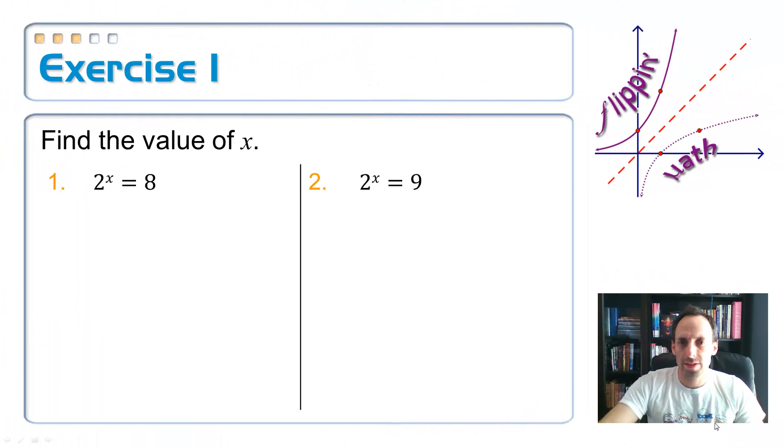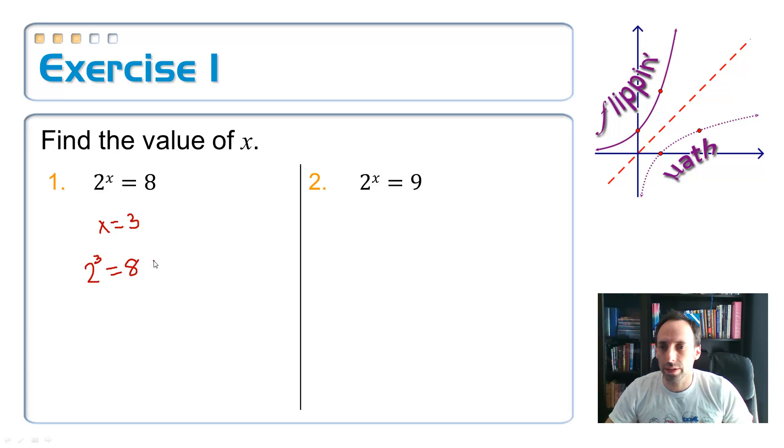So on this first exercise here, question number one's not too bad. It's saying 2 to the x power is equal to 8. So in other words, what's the power on 2 got to be in order to get 8 as the answer? So that one's pretty easy, because you probably by now already know your powers of 2. 2 to the third power, that's right. So x is equal to 3, because 2 to the third power is equal to 8. Check. All right, not a problem.